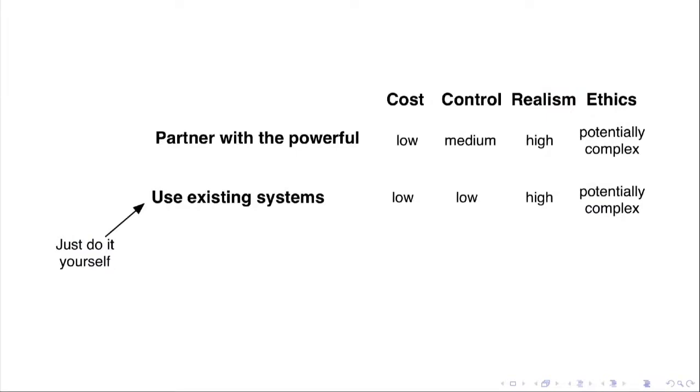OK, so that's one approach is partnering with the powerful. I often think that partnering with the powerful can sometimes be more trouble than it's worth. And so the other strategy is just do it yourself. Like, don't worry about all these people. Just do it yourself.